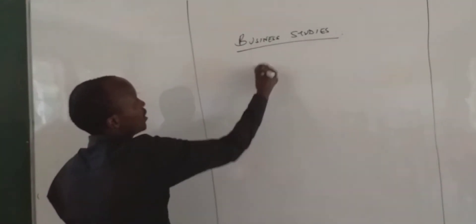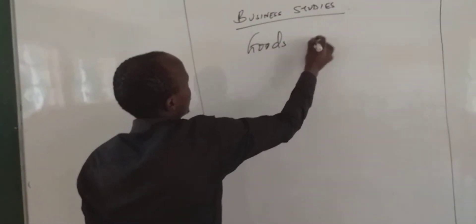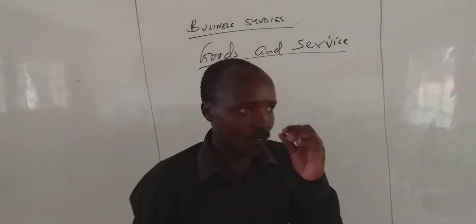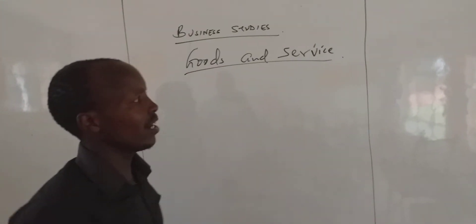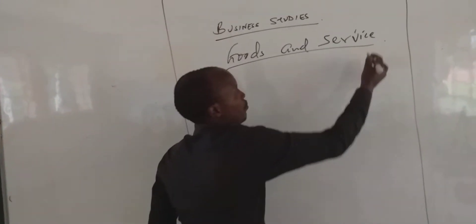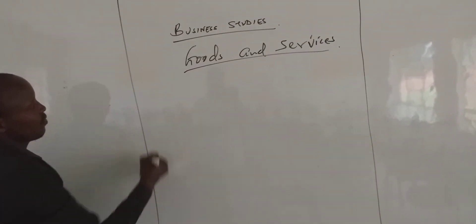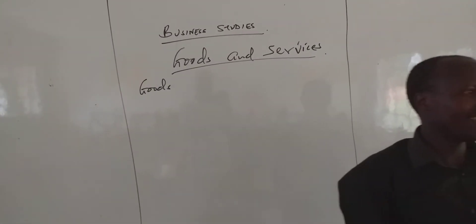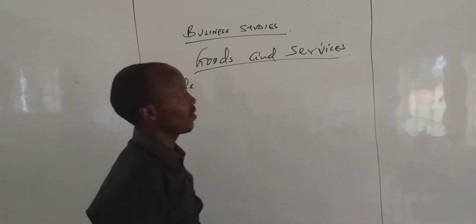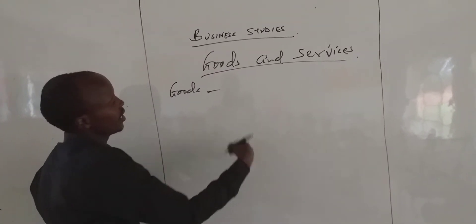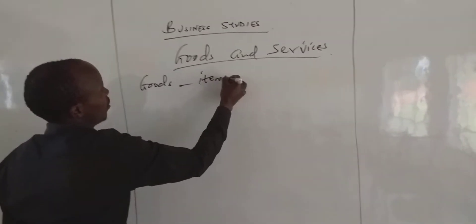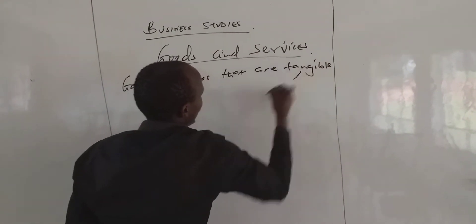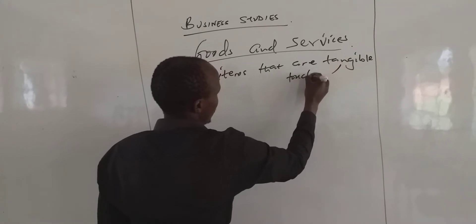Let us look at goods and services. I believe that you know what goods are and what services are. I will define them, then go to my main point which is categories of goods and services. What are goods? Goods are anything which you can touch and feel — that pen you are holding, maybe that lock. So simply say that goods are items which are tangible, in other words you can touch and feel them.